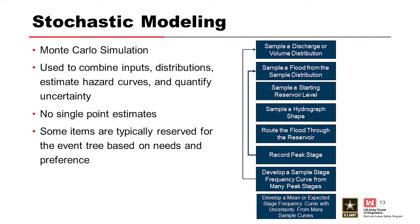What is stochastic analysis? We use a Monte Carlo simulation, sampling hundreds of thousands of different options of your inputs to develop uncertainty for your curves. The first step is the flow frequency curve — it samples a discharge or volume of water, then selects a starting stage and hydrograph shape, routes through a reservoir model, and computes a peak stage. It does that thousands of times to develop one stage frequency curve, then repeats across all input variations, producing many thousands of stage frequency curves from which it computes the 5th and 95th percentile confidence intervals plus the mean and median.